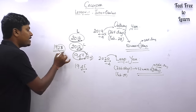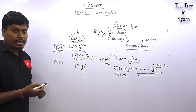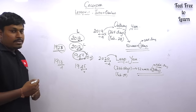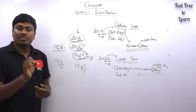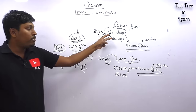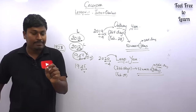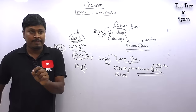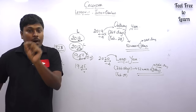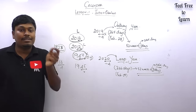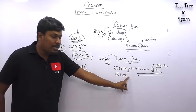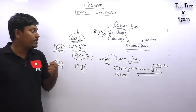For 1923: last two digits are 23, not divisible by 4 — ordinary year. For the year 16: divisible by 4 — leap year. To summarize: if a year's last two digits are divisible by 4, it's a leap year with 366 days (52 weeks + 2 odd days); if not, it's an ordinary year with 365 days (52 weeks + 1 odd day).